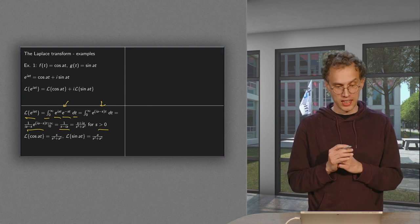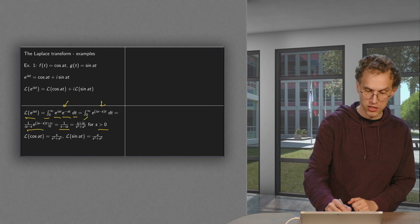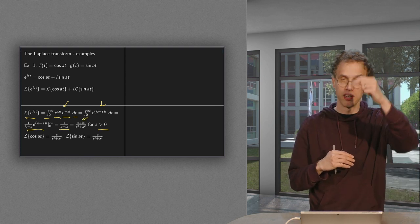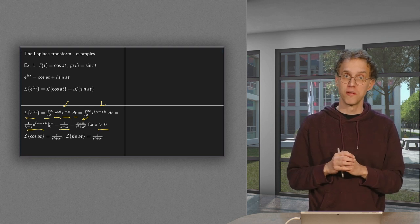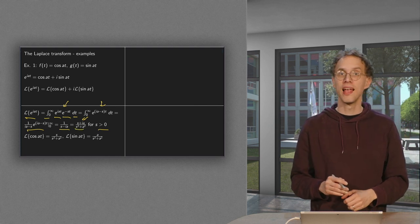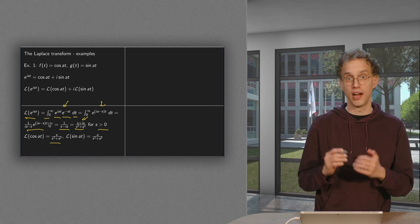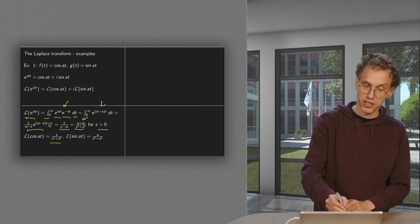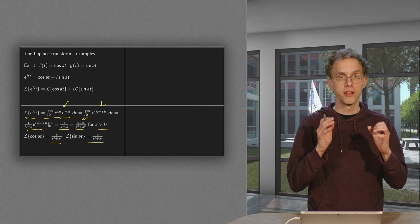To take the real and imaginary parts, we multiply by (s + ia) on top and below. On top we get s + ia, and below we get s² − i²a² = s² + a². The Laplace transform of cosine is the real part, which is s over (s² + a²). And the Laplace transform of sine is the imaginary part, which is a over (s² + a²).